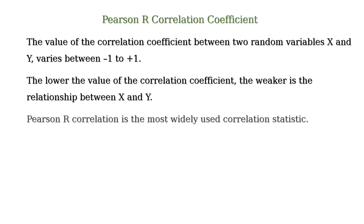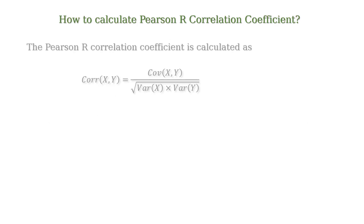Pearson R correlation is the most widely used correlation statistic. The Pearson R correlation coefficient is calculated as follows: the correlation coefficient of x and y is equal to the covariance of xy divided by the square root of the variance of x multiplied by the variance of y.